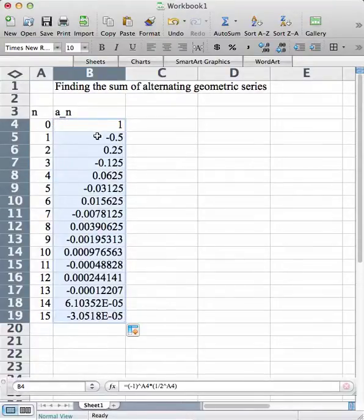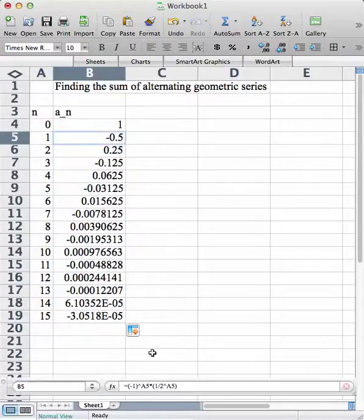And look what happens. So I click on this one. I look at my formula. It's negative 1 to the A5 power. Well, here's A5. It's to the 1 power. And it's 1 over 2 to this power. So it's 1 half. And it keeps alternating signs and gets smaller and smaller and smaller.